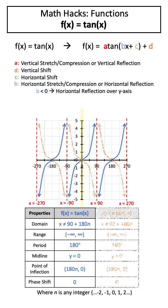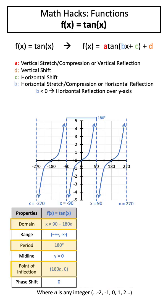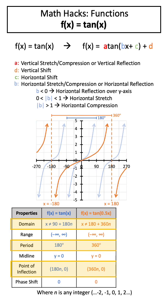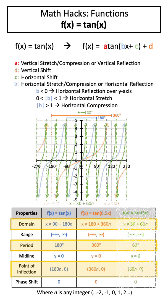If b is less than 0, this will reflect our function over the y-axis. If the absolute value of b is between 0 and 1, this will horizontally stretch our function, whereas if the absolute value of b is greater than 1, this will horizontally compress our function.